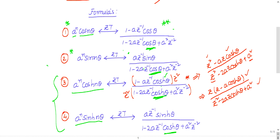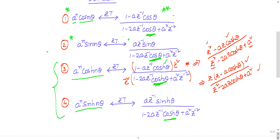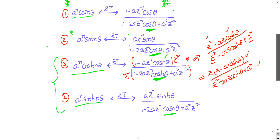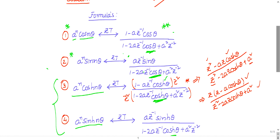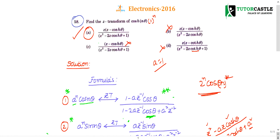Just remember these four formulas — don't try to expand using coshθ = (e^(iθ) + e^(−iθ))/2 and all those things. Please avoid that approach; it takes a lot of time in the exam. With these four formulas, any question in this category can be solved. If you have any queries, post them in the comment box and subscribe to the channel for more updates. Thank you.